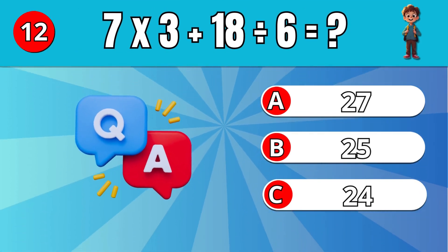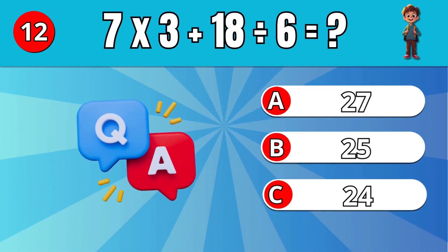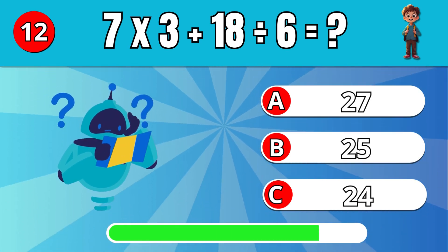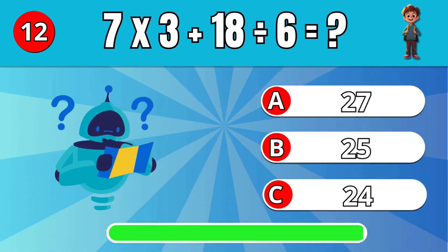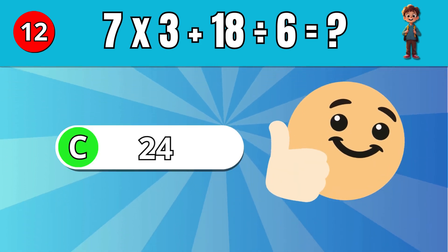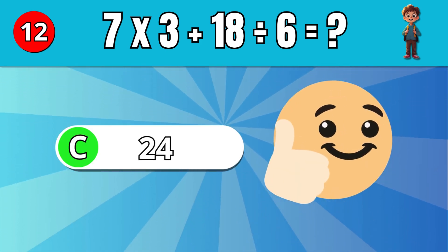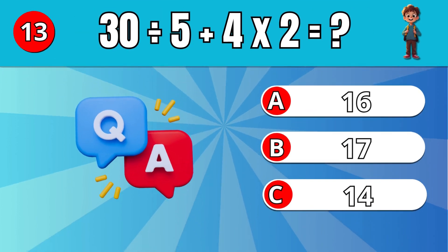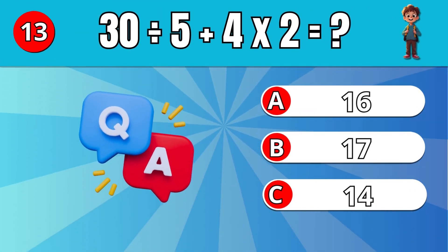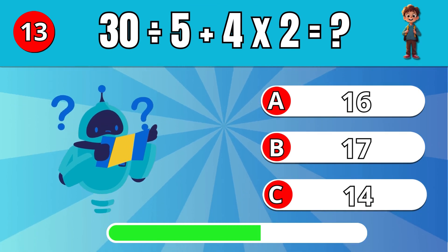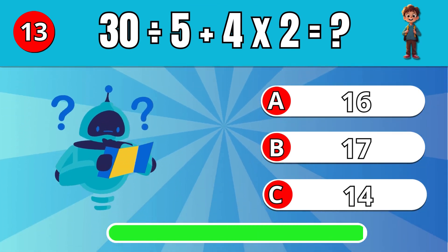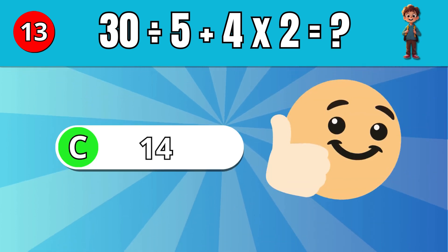What is 7 times 3 plus 18 divided by 6? C: 24. What is 30 divided by 5 plus 4 times 2? C: 14.